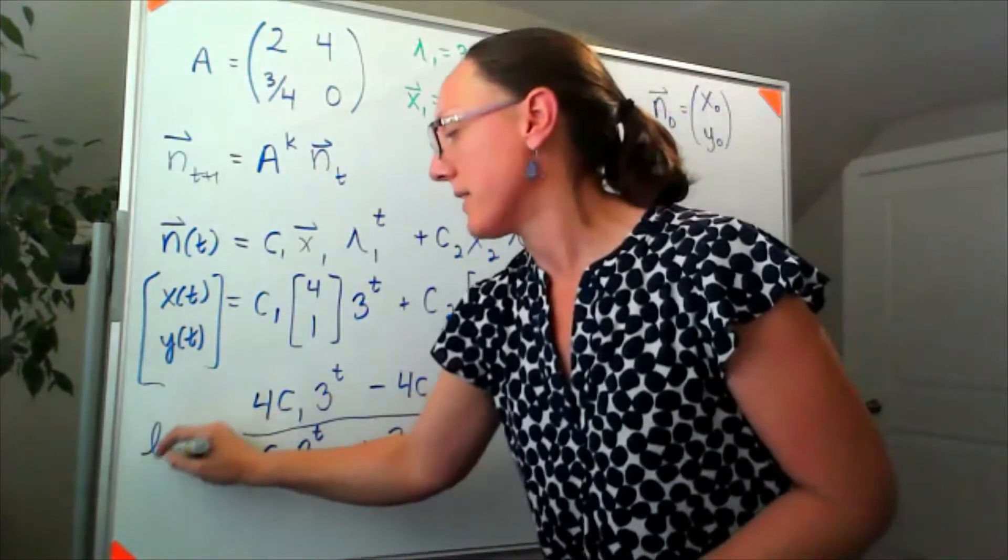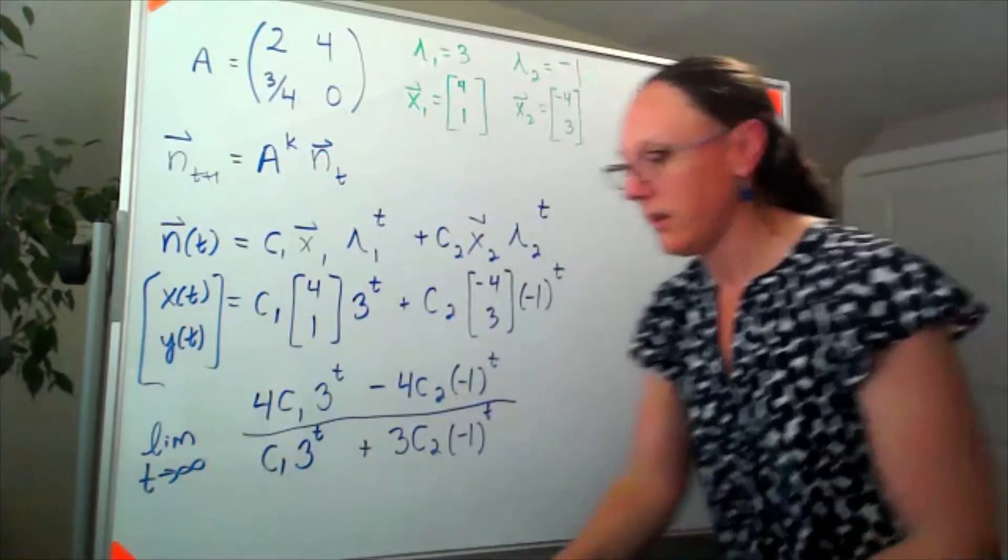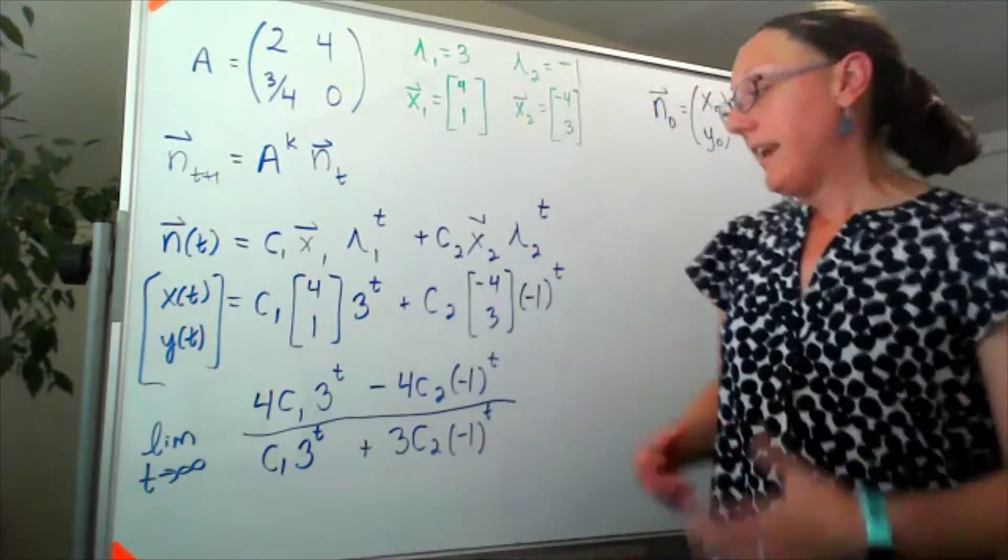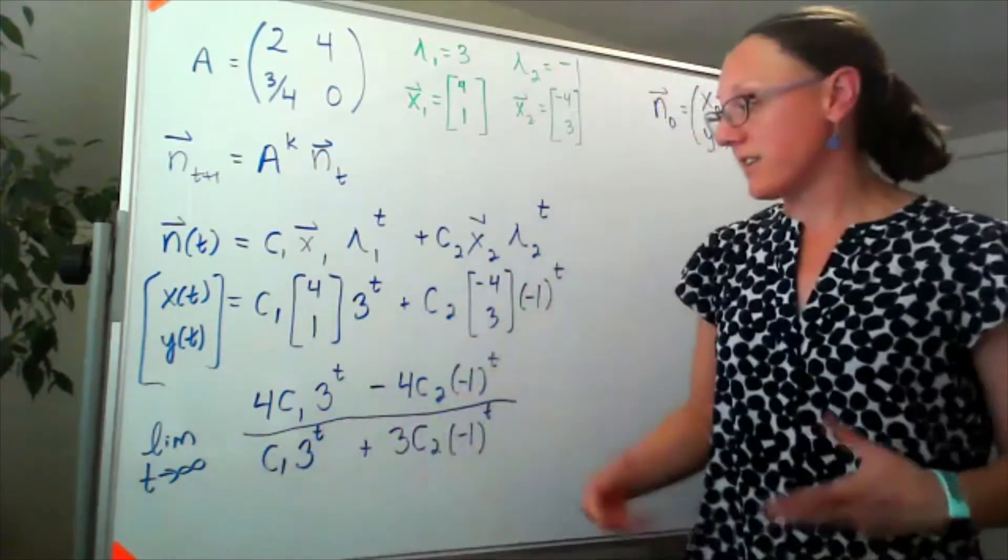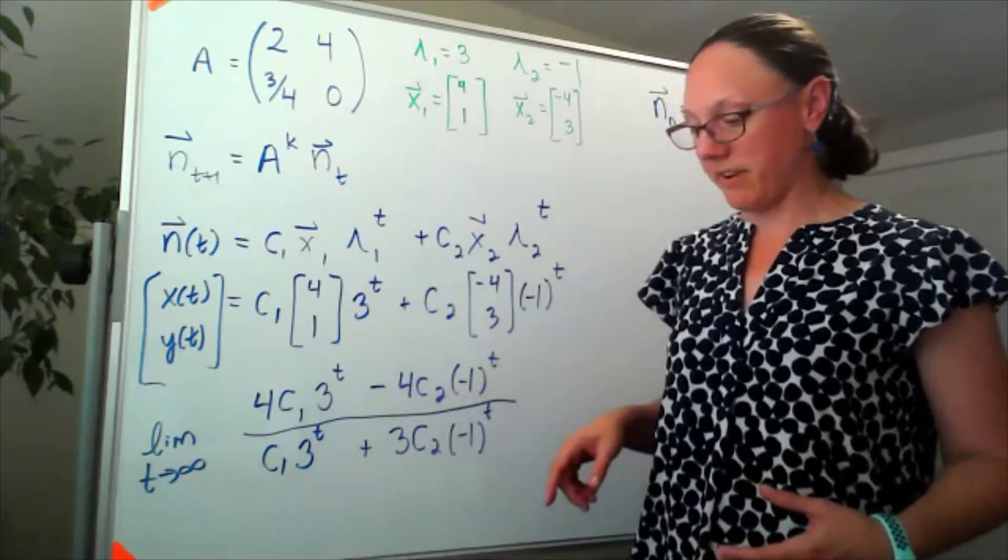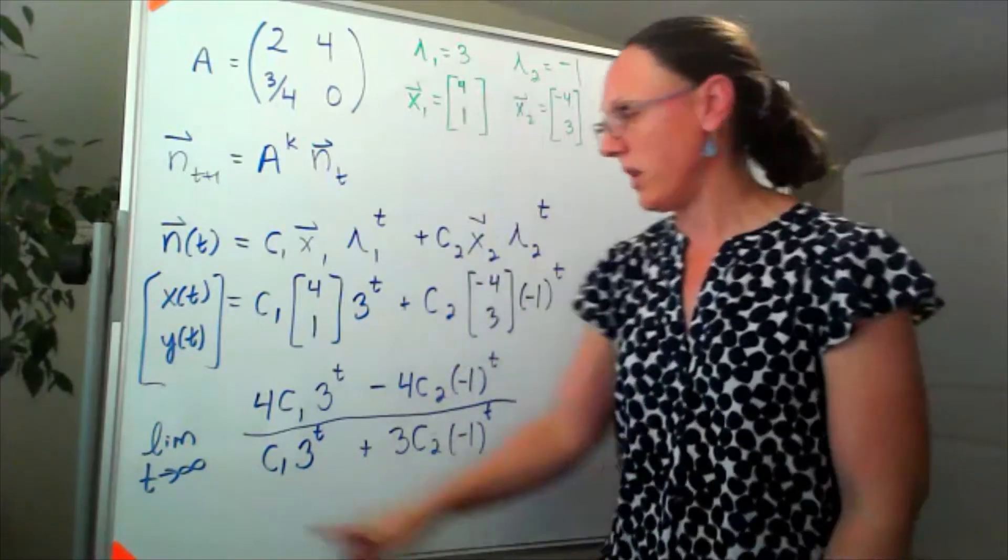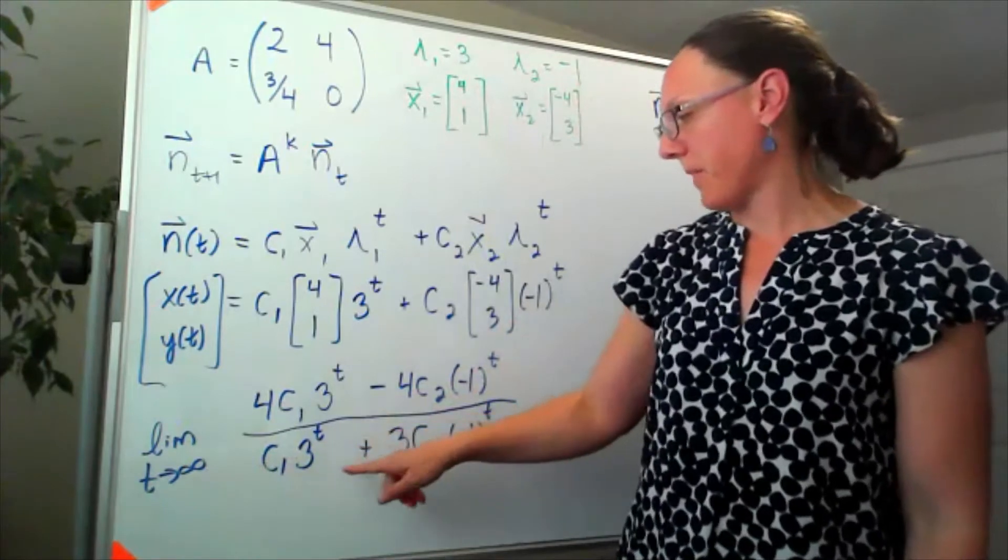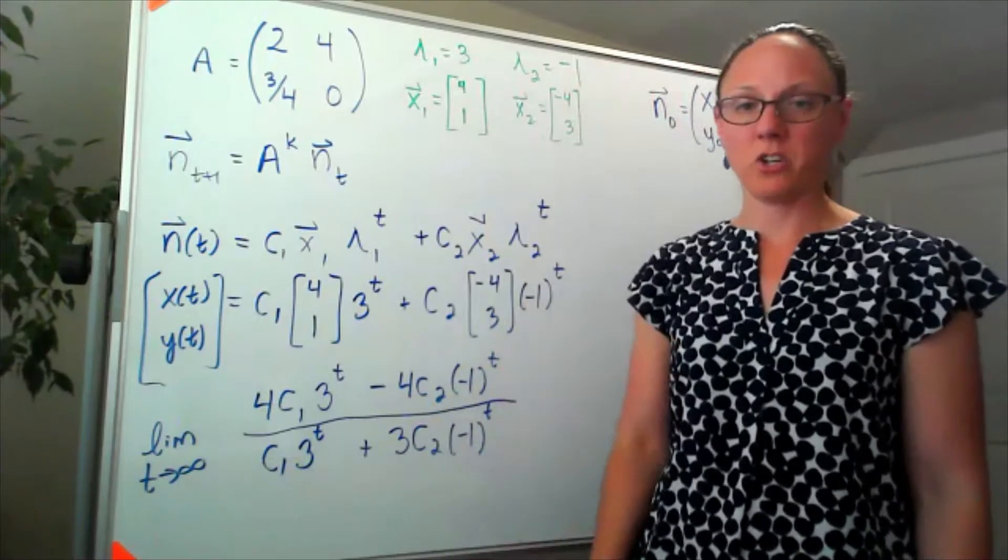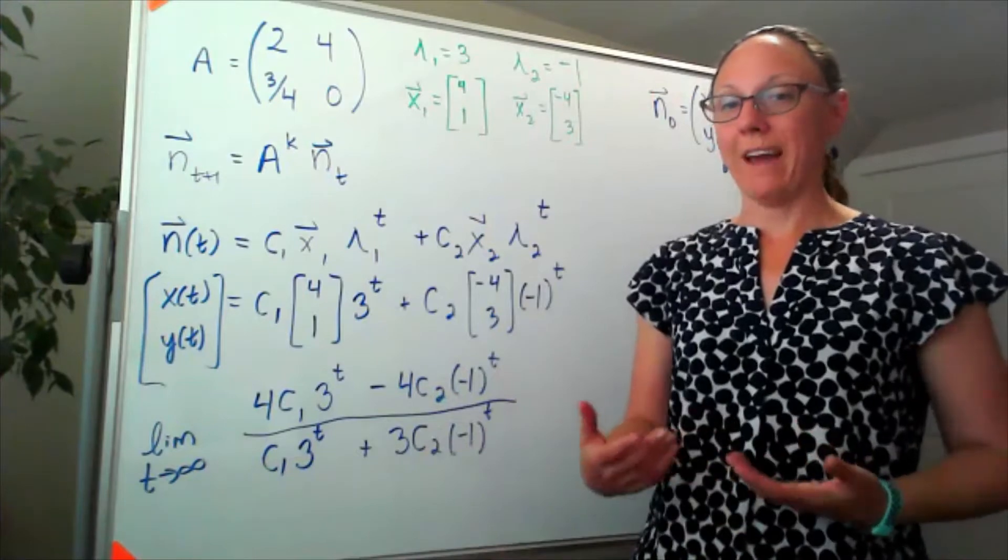Now we have to think back to our 17a skills. If I take t to infinity, 3 to the infinity is infinity. Negative 1 to the infinity, well that's garbage because I'm alternating between negative 1 and positive 1, so that's not even useful. And now I've got 3 to the infinity, so some more infinity and some more garbage.